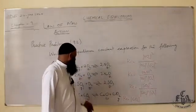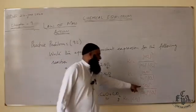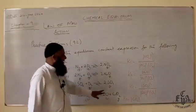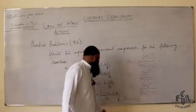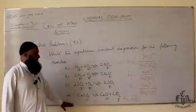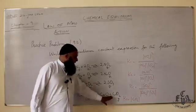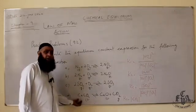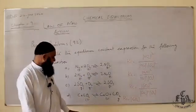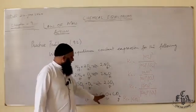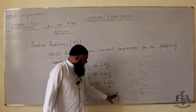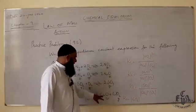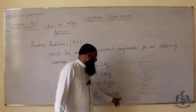Example three: calcium carbonate decomposes into calcium oxide and carbon dioxide. Since calcium carbonate is a solid, we ignore it. Calcium oxide is also a solid, so it is also removed from the expression. Therefore, the equilibrium constant expression reduces to Kc equals the concentration of CO₂ raised to power one. This demonstrates the rule that solids and liquids are excluded from the equilibrium constant expression.